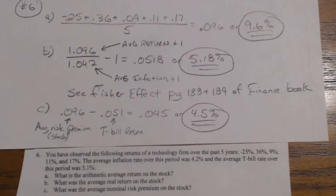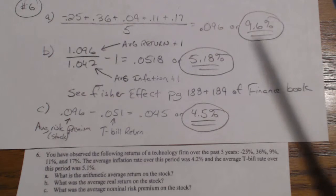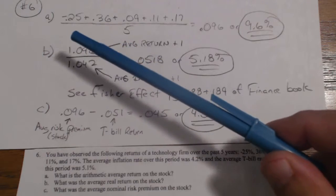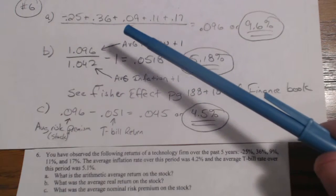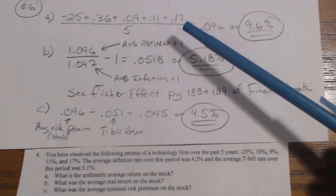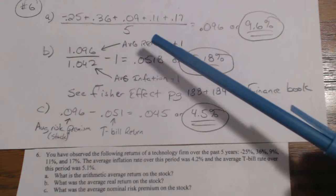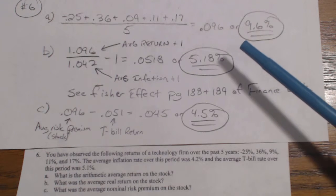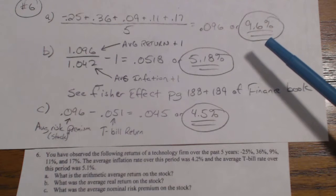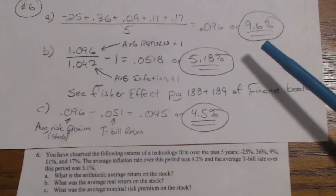So they want you, part A, what is the arithmetic average return on the stock? With arithmetic, remember you're adding all those returns together and then dividing them by the number of years or the period of time. So in this case, the negative 25%, the 36%, the 9%, the 11%, and the 17%, you add those together, divide it by 5 years, 5 period of time, 0.096. So 9.6% was your average return over those 5 years.